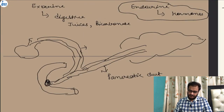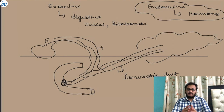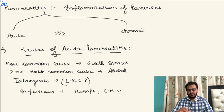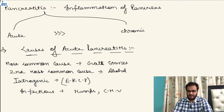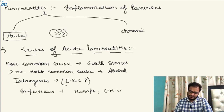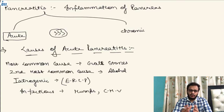Now let us focus on what acute pancreatitis is. Whenever any acute injury occurs to the pancreas, it always manifests as pancreatitis. Any stress to the pancreas will lead to inflammation of the pancreas. Pancreatitis, as the name suggests, is sudden inflammation of the pancreas. It has an acute form and a chronic form. The acute form is much more common than the chronic form.